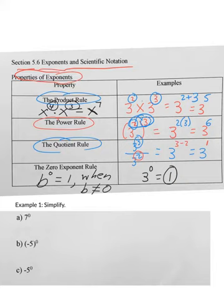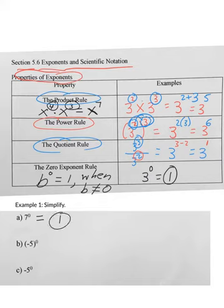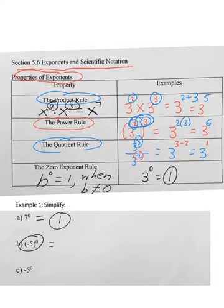Example 1: simplify the following. Part a: 7 to the 0 power — any number besides 0 raised to the 0 power is 1. Part b: negative 5 raised to the 0 power. The negative sign is inside the parentheses, so the 0 exponent applies to the negative sign as well, giving 1.